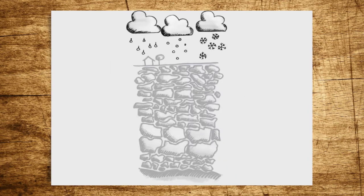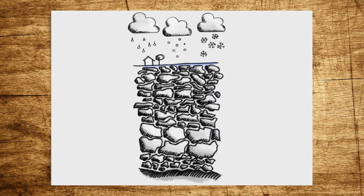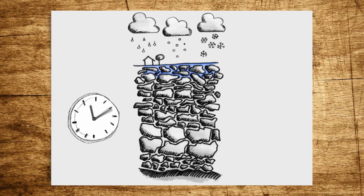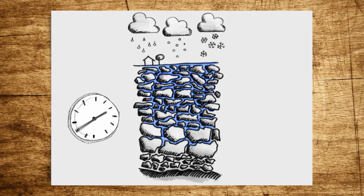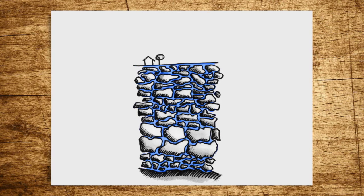Having reached the ground, precipitation starts a journey that may take days, months, or even years. The water works its way down through tiny cavities at different speeds, depending on the type of rock layer. Here, it is purified just like running through a filter.